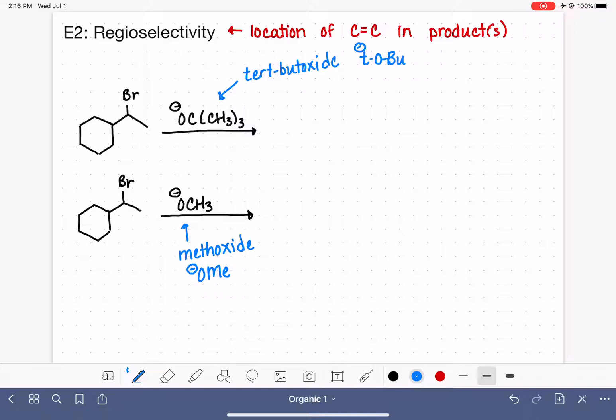And what I want you, with the tert-butoxide, I'm going to almost immediately erase this, but the structure of the tert-butoxide is carbon with three methyl groups on it. And I want you to kind of keep that in mind about having those three methyl groups on the carbon atom. It's going to come up as we talk about this reaction.